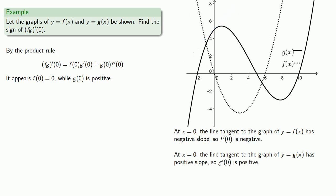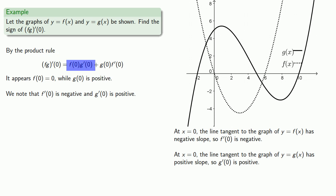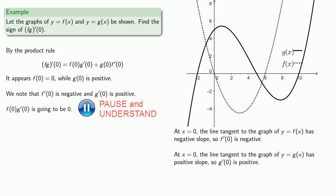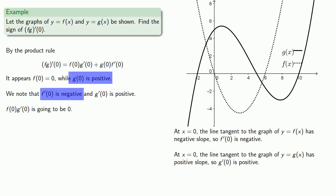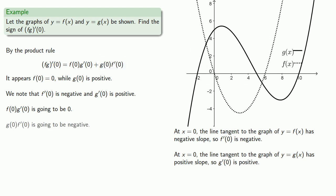Now let's consider our formula for the derivative of the product. f of 0 is 0 and g prime of 0 is positive, so this first term will be the product of 0 and a positive number, so it's going to be 0. Meanwhile in our second term, g of 0 is positive and f prime of 0 is negative, so this second term is going to be the product of a positive and a negative number, so that'll be negative. Our derivative is going to be the sum of 0 and a negative number, so it's going to be negative.